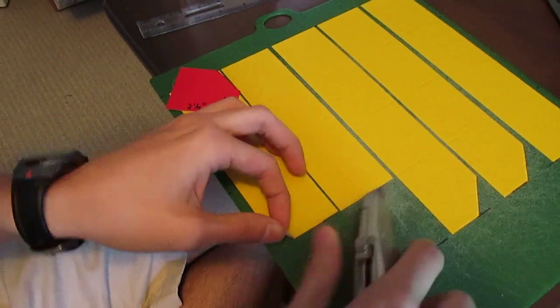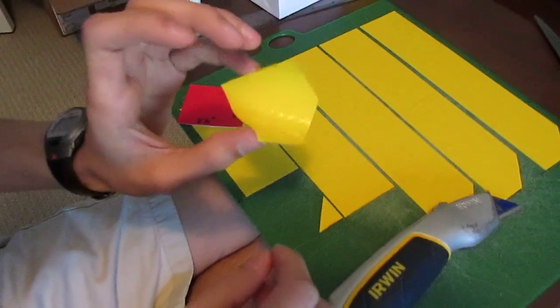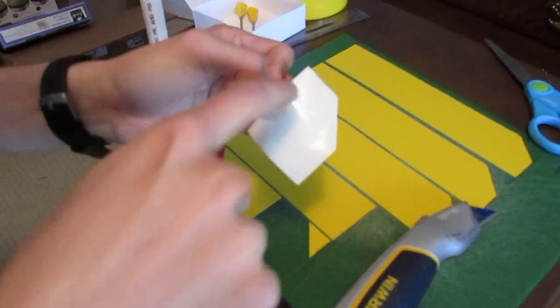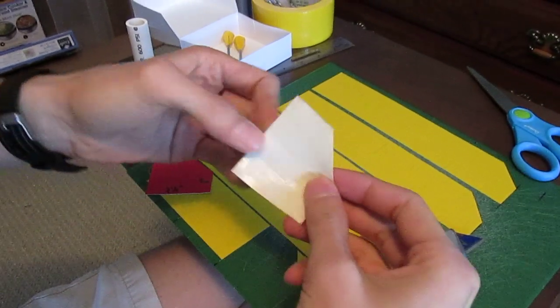So you take this, peel it up, and because you lay down the roll this way, you want to be folding it so that these horizontal lines lay on top of each other.